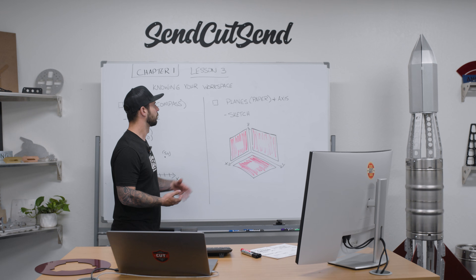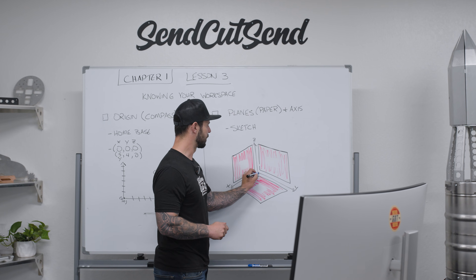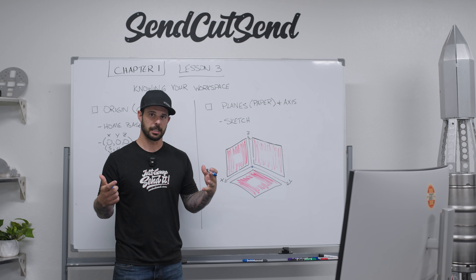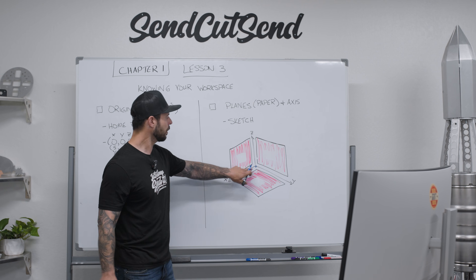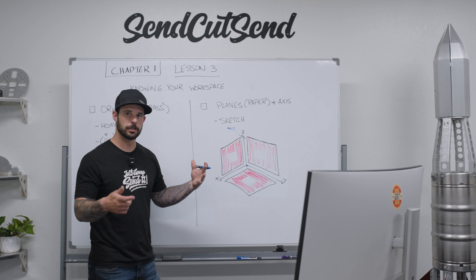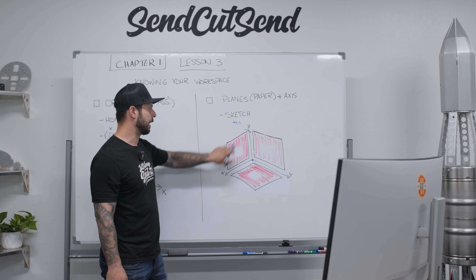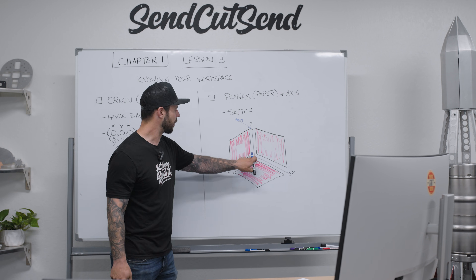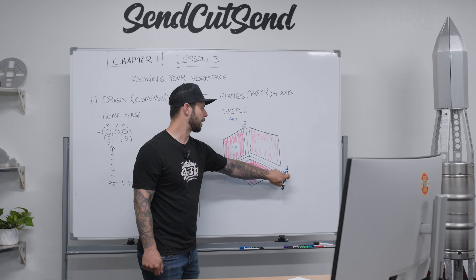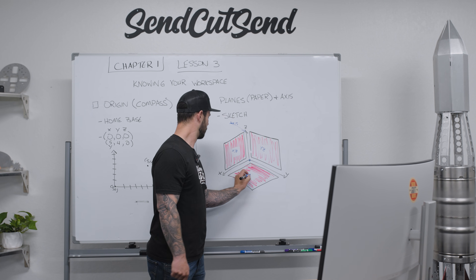Coming back to the whiteboard, let's go over what planes and axes are. Our origin point is in the middle — our X, Y, and Z zero. From there, three lines go out, all perpendicular to each other at 90 degrees: an X axis, a Y axis, and a Z axis. These are our axes. In between each pair of axes makes a flat sheet — that's our plane. Planes are labeled based on the axes that make them: X and Z make the XZ plane, Y and Z make the YZ plane, and X and Y make the XY plane.